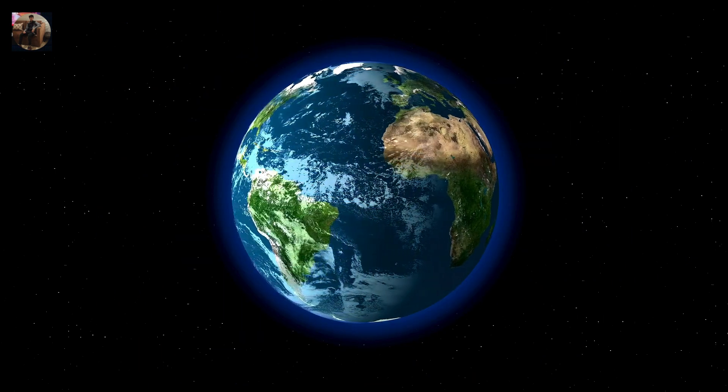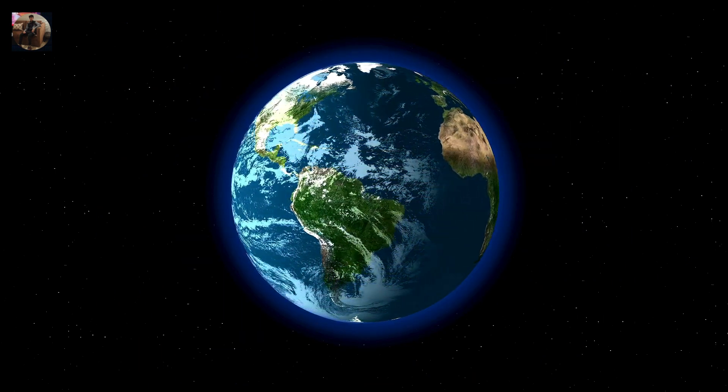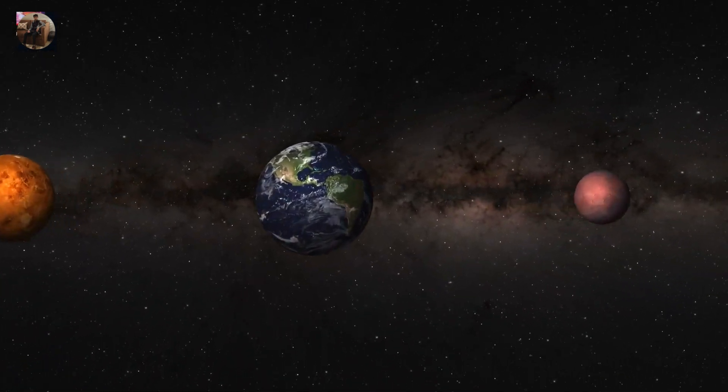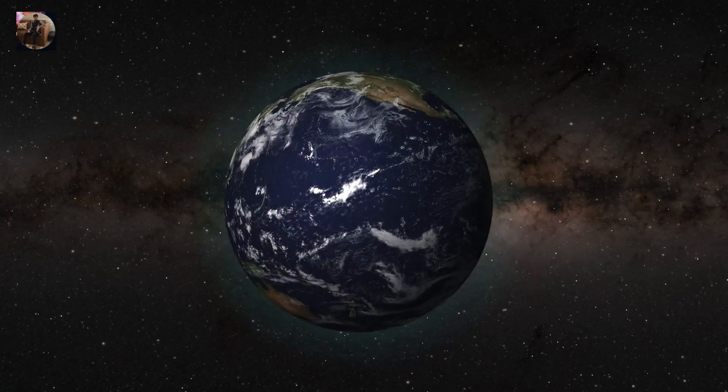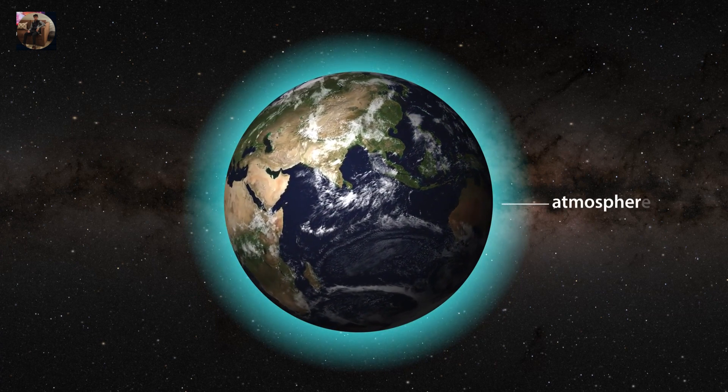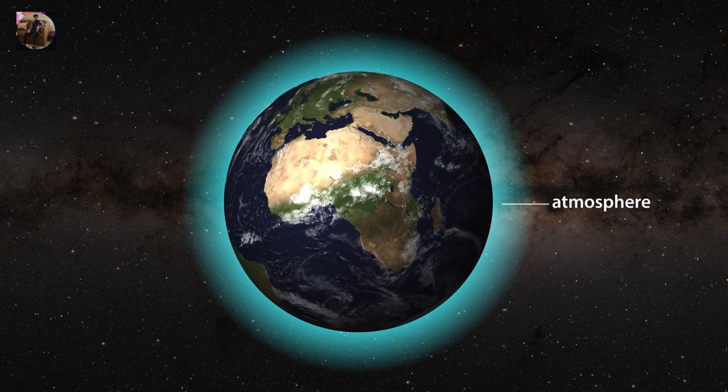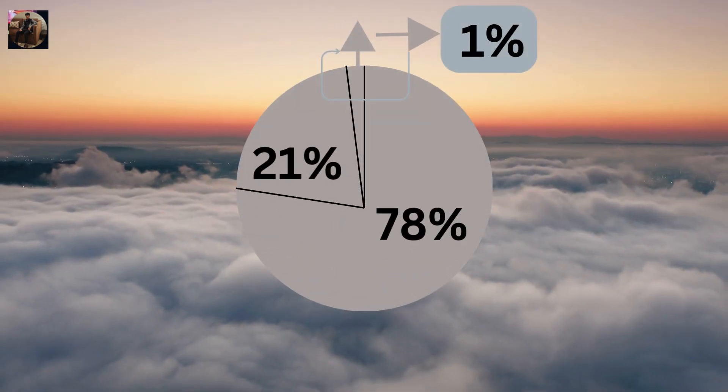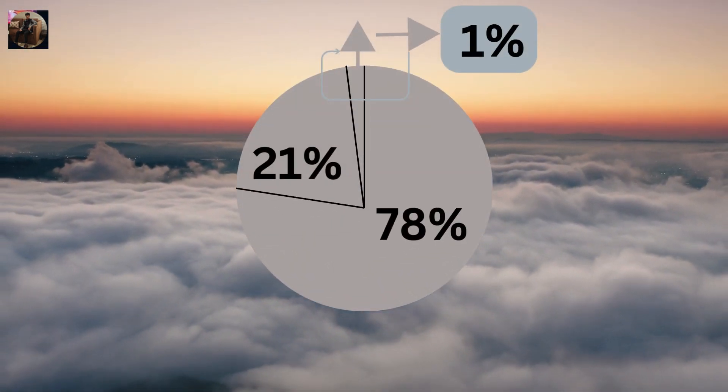Look at our planet from space and you will notice something very incredible: a thin glowing blue layer surrounding the Earth. That's our atmosphere, and it's what makes life possible here. But what exactly is the atmosphere and why is it so important? Let's try to understand in this video.